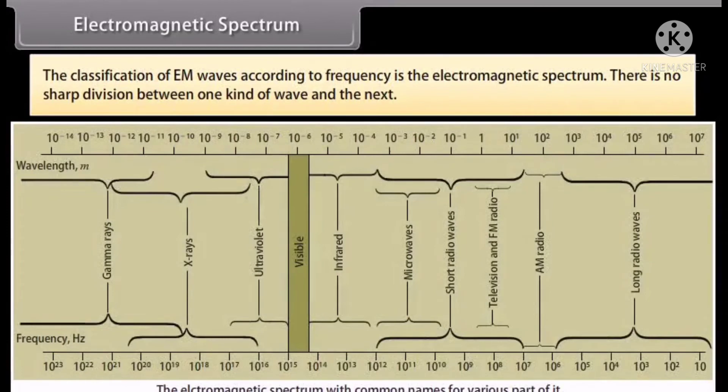Electromagnetic spectrum: The classification of EM waves according to frequency is the electromagnetic spectrum. There is no sharp division between one kind of wave and the next. The classification is based on how the waves are produced or detected. Let us describe these different types of electromagnetic waves in order of decreasing wavelengths.